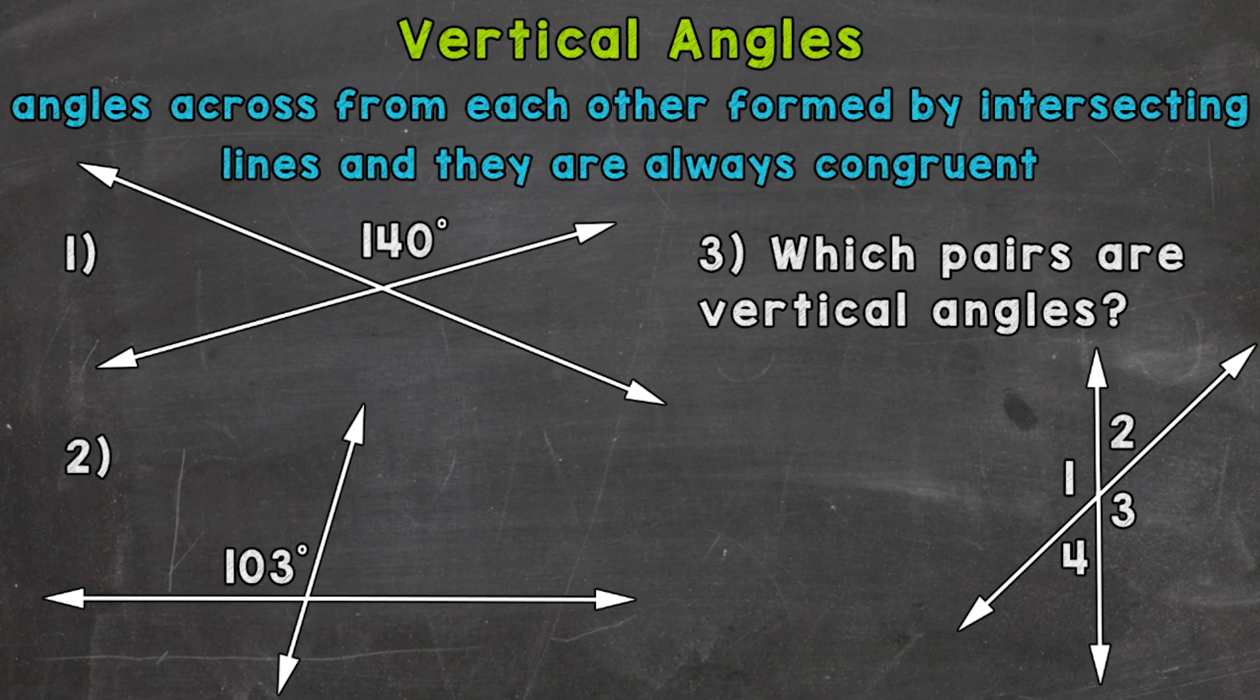So let's jump into number one where we have two intersecting lines that create four angles. Now we're given 140 degrees for that top angle there. So which angle is going to be the vertical angle with our given measurement of 140 degrees? Well it's the angle right across or opposite from that.